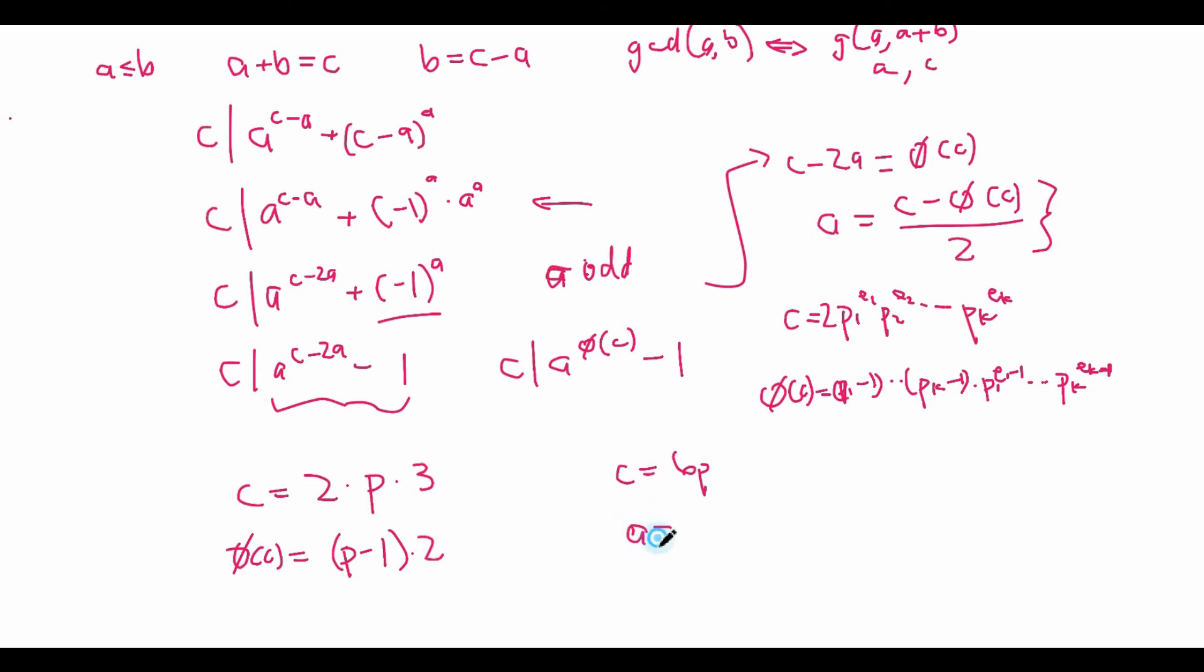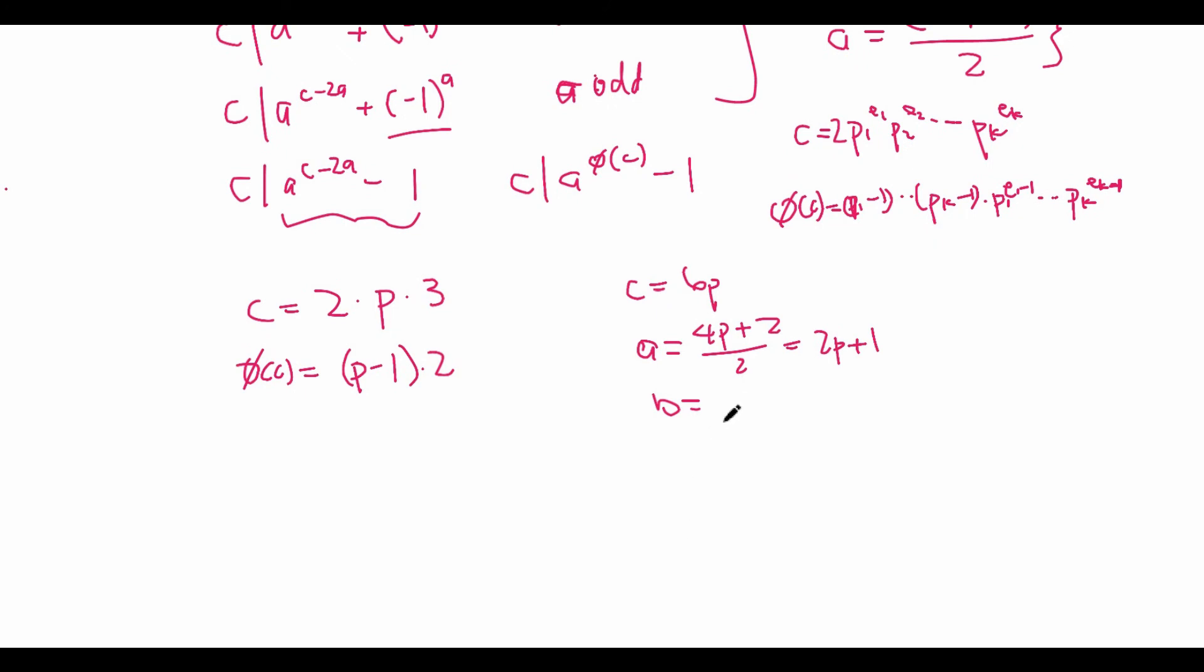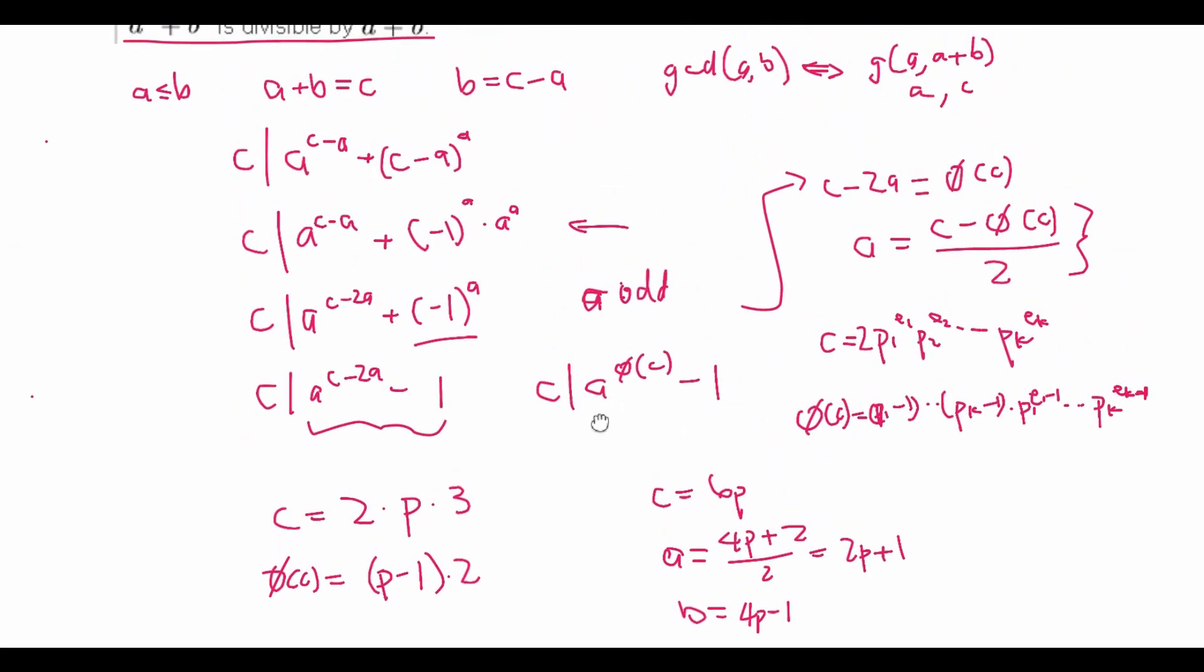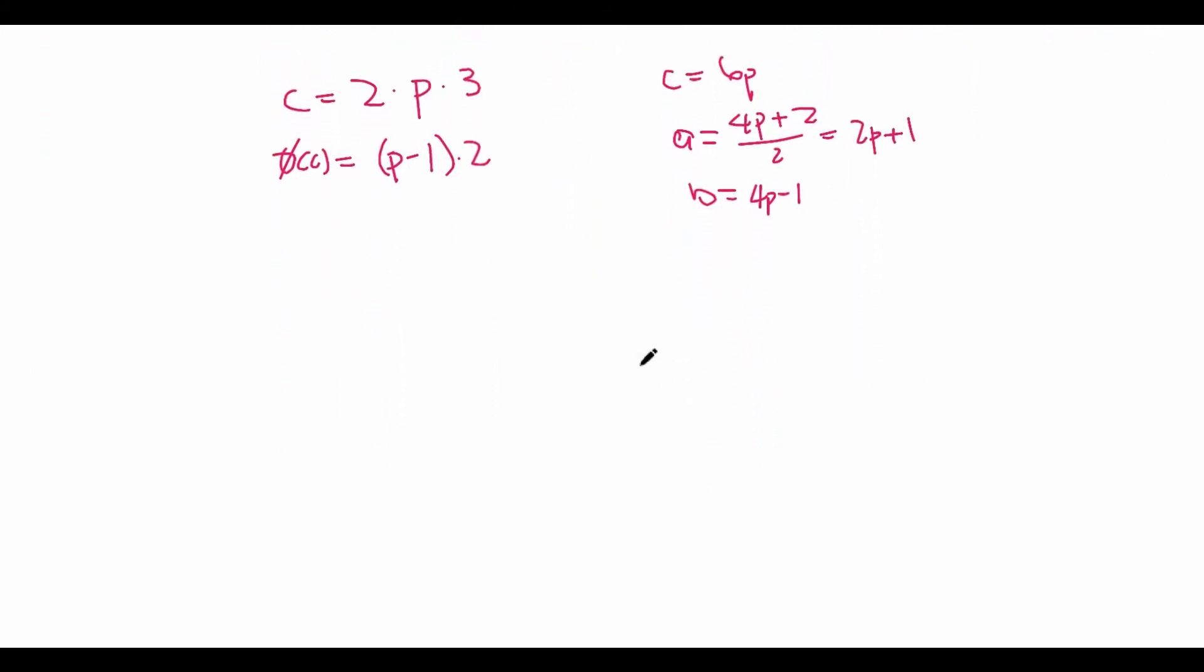And a equals 6p minus 2p plus 2, which should be 4p plus 2. And then we have to divide by 2. So that equals 2p + 1. So that means b is equal to 4p - 1. Okay, so we have a = 2p + 1, b = 4p - 1. And this is our proposed construction.